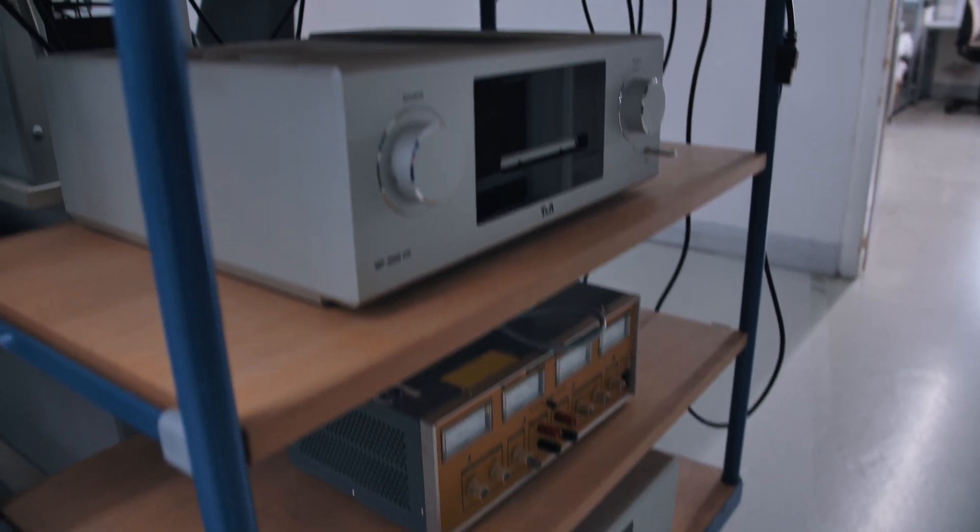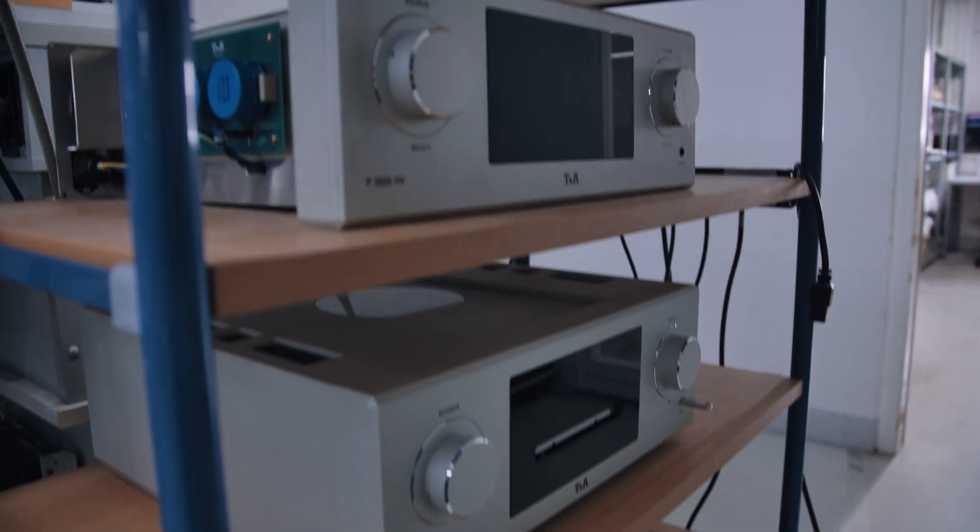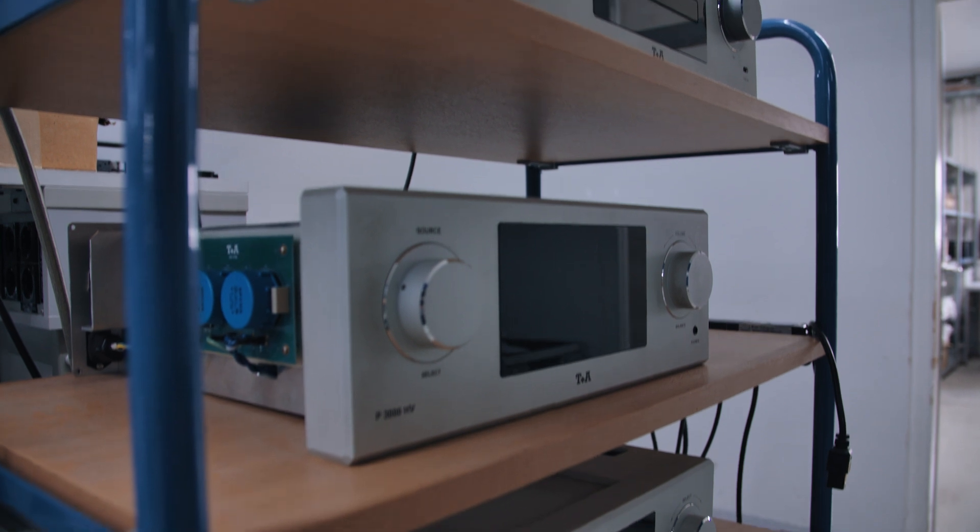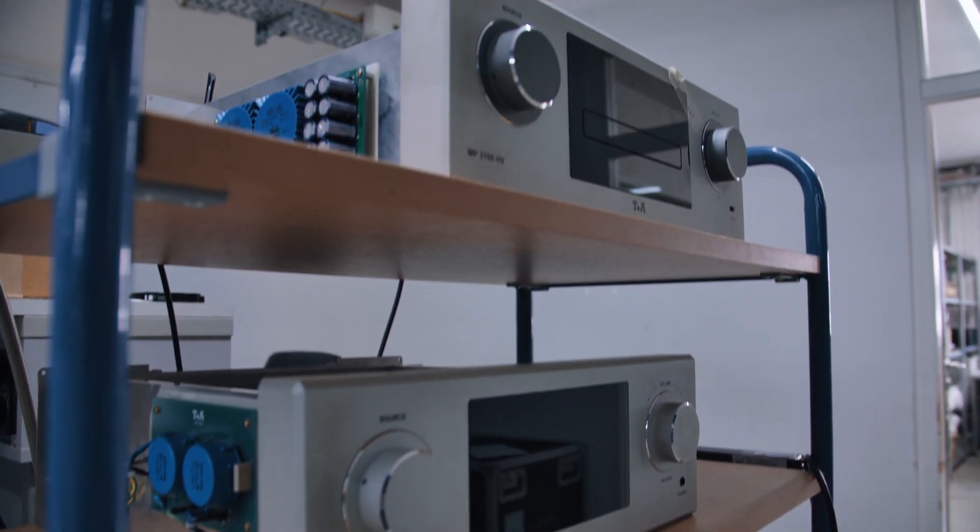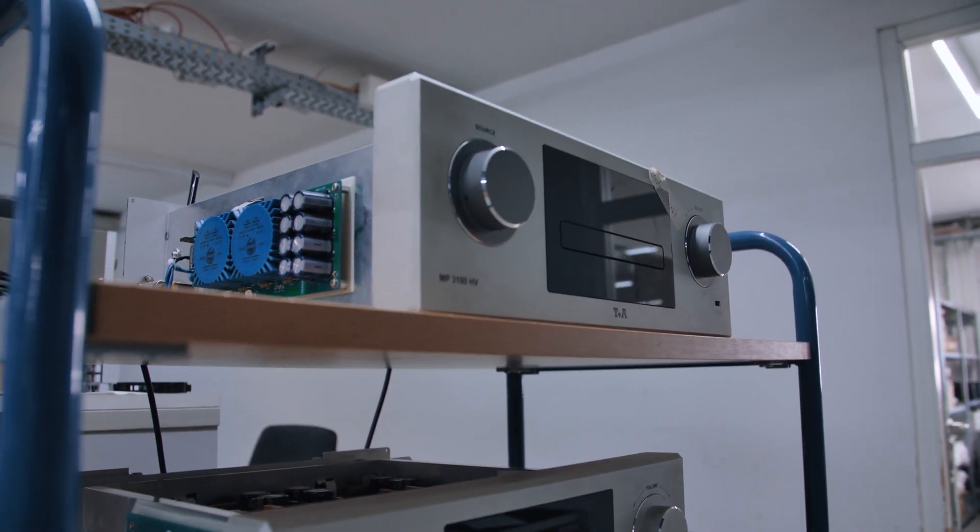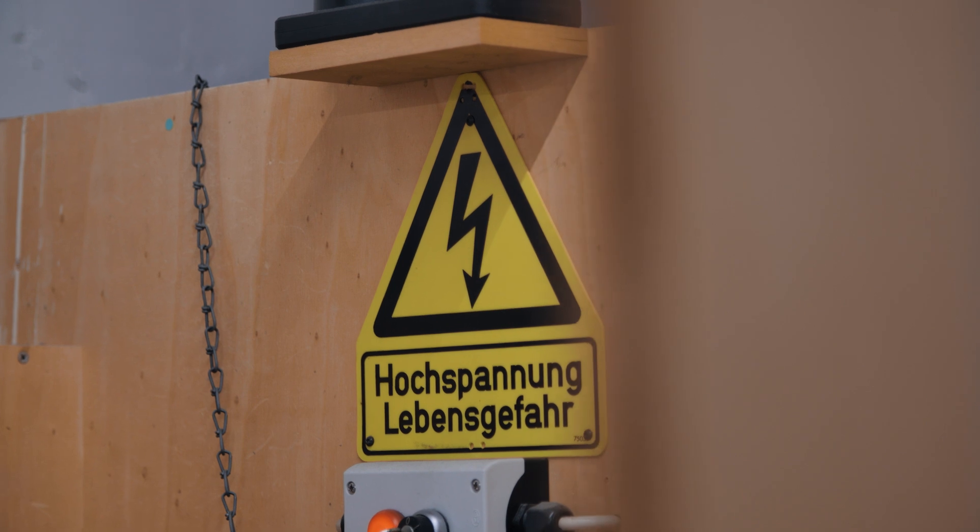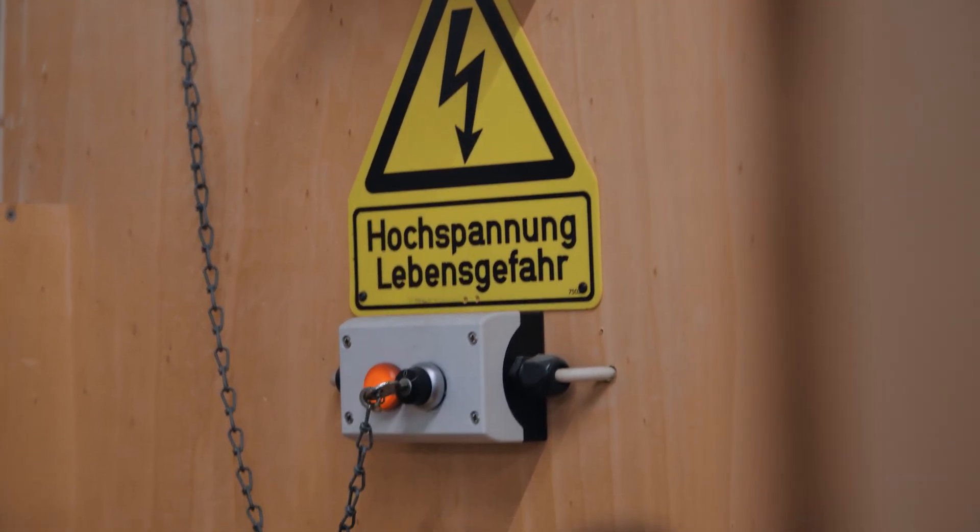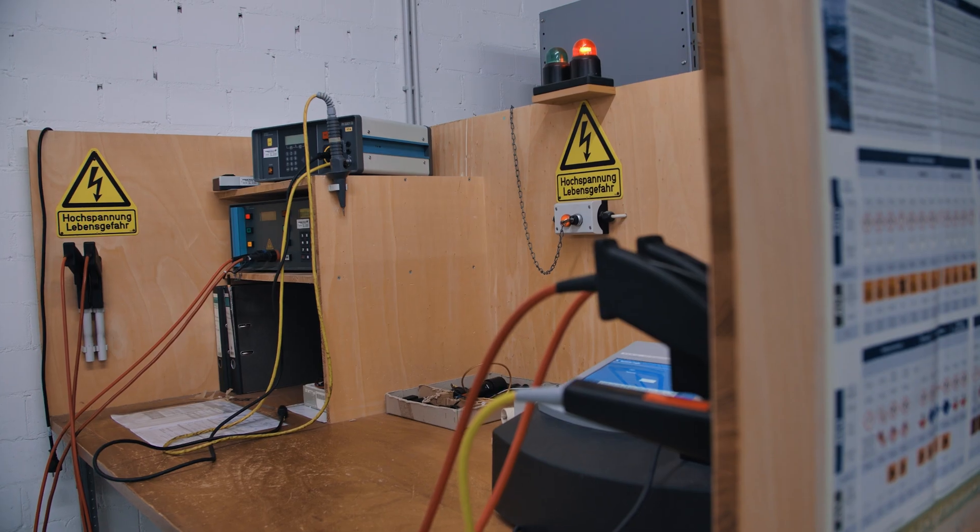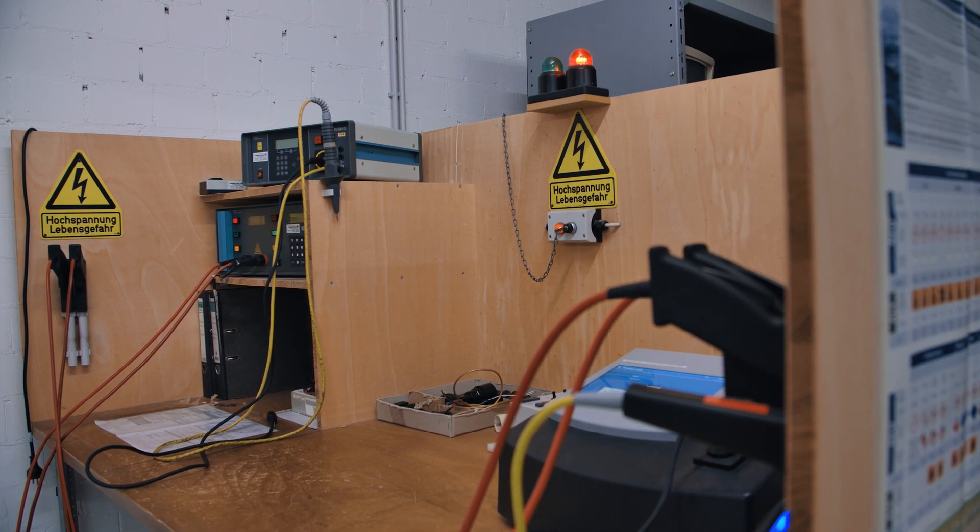My finding then was that one of the main differences between semiconductors and tubes is the rail voltage. Tubes operate on much higher rail voltages than semiconductors. I began experimenting with semiconductor amplifiers using also very high rail voltages, and when I say high rail voltages I mean something like plus minus 350, 400 volts for an amplifier.